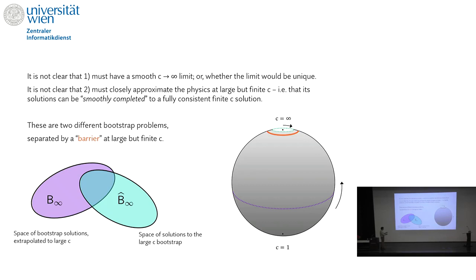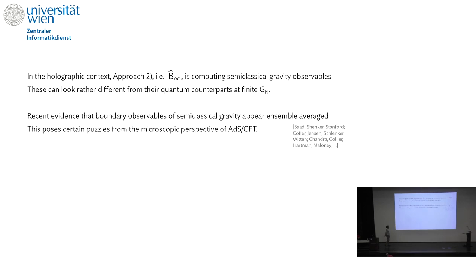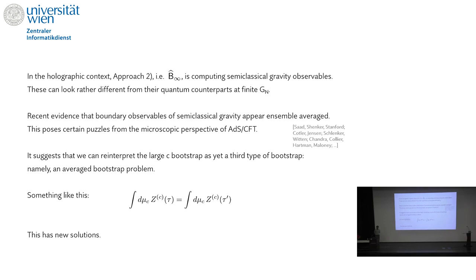There are two spaces of bootstrap solutions. Let's call B_∞ the space of bootstrap solutions at central charge C extrapolated to C equals infinity, and B̂_∞ the space of solutions to the large C bootstrap solved order by order around infinite C. These spaces can overlap but are not the same space in general. In the holographic context, the second approach computes semi-classical gravity observables, which can look rather different from their quantum counterparts at finite G_Newton. There is recent evidence that boundary observables of semi-classical gravity appear ensemble-averaged, which poses certain puzzles for AdS/CFT.